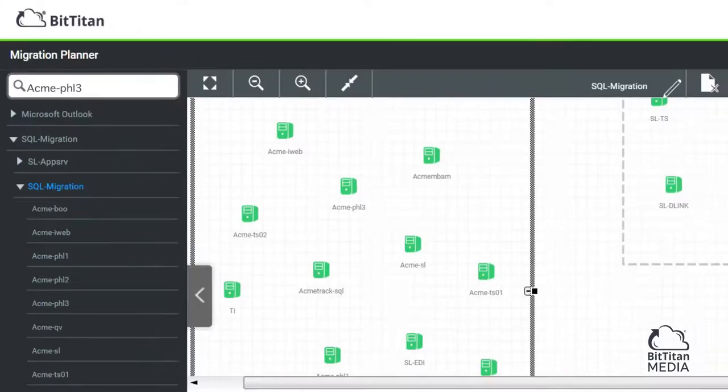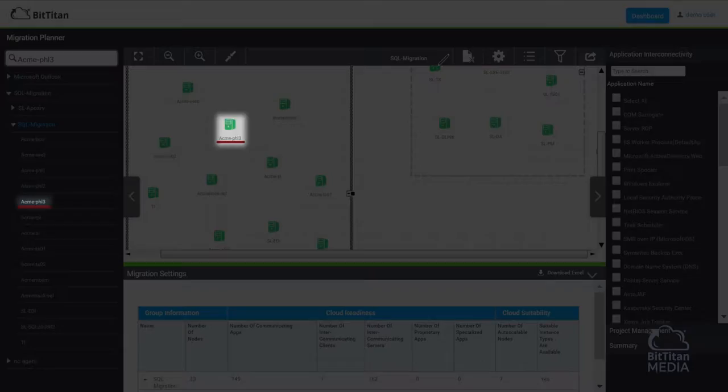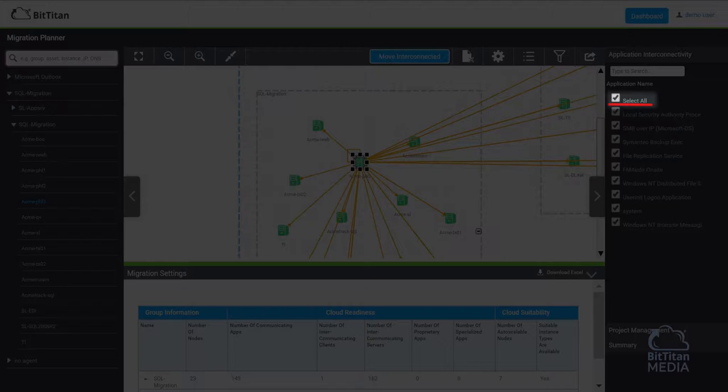What we're going to do is use this search box here to just look at one server that we did look at earlier, the Acme server. As we're searching that out, we can have a quick look at just that server and what's running on that, and there is a list of a few applications. If we select all those applications, we get a very quick picture of what that server is communicating with within the environment.